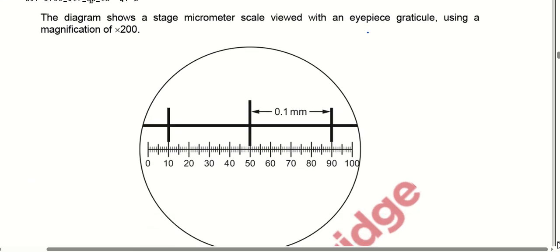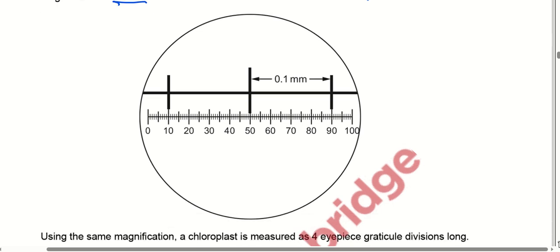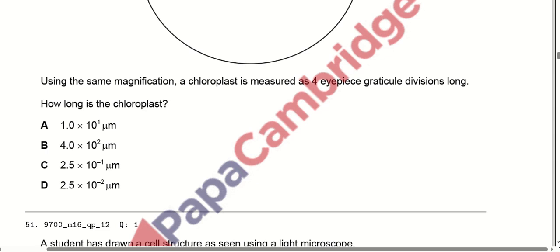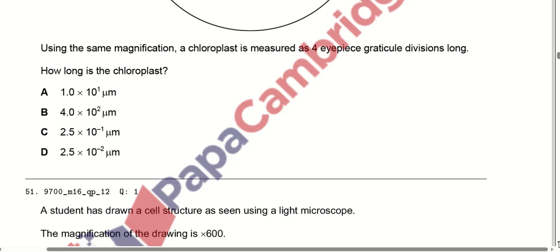The diagram shows a stage micrometer scale viewed with an eyepiece graticule using a magnification of 200×. Using the same magnification, a chloroplast is measured as 4 eyepiece graticule units. How long is the chloroplast? It comes out to be 1 × 10 to the power 1 micrometres.